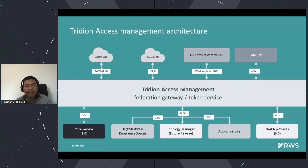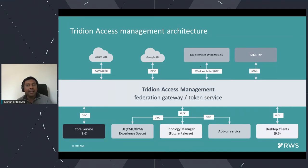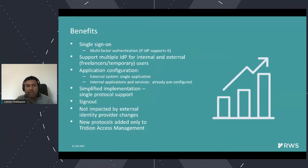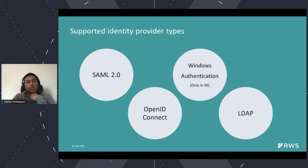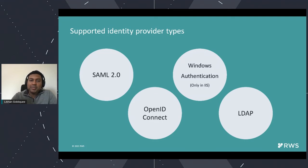All of those complexities are no longer there because we have centralized Access Management. Your SAML configuration is in a single place. If your certificate expires, you go into Access Management, update the certificate, and automatically all Tridian applications under the hood can use that — without going into all individual applications to ensure the certificate is updated. Out of the box, we support SAML 2.0, OpenID Connect, Windows authentication — though Windows authentication only works when Access Management is running in IIS — and LDAP authentication.